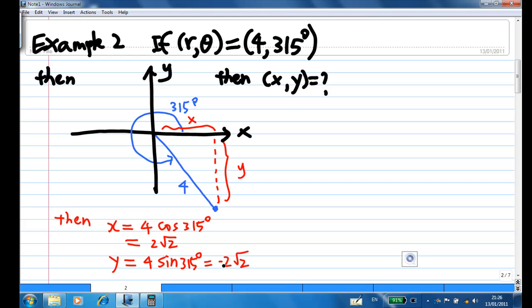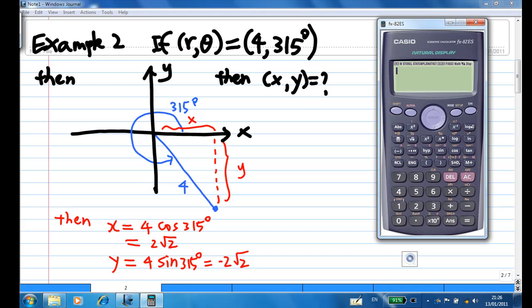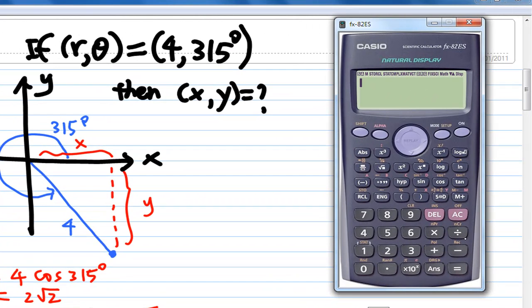Now you can do this directly using the calculator. The calculator has a REC function, which means convert polar to rectangular form. So I press shift REC. R is equal to 4, then comma, and the angle is 315. Close the bracket and then press equal.